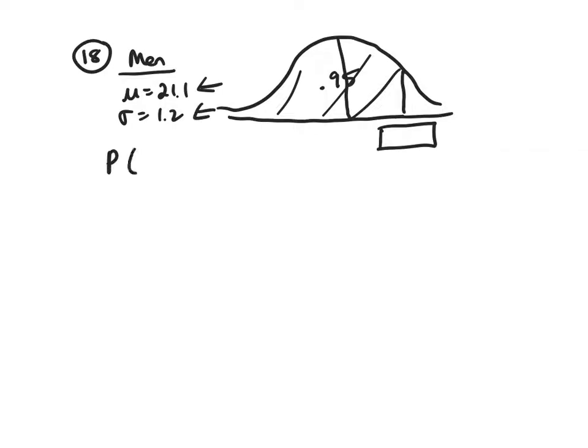And at the bottom, you're going to see probability X. This is less than. So, you're going to choose less than or equal to. And you're trying to figure out that X when the probability is 0.95. And you're going to press compute and you're going to get an answer of 23.1.